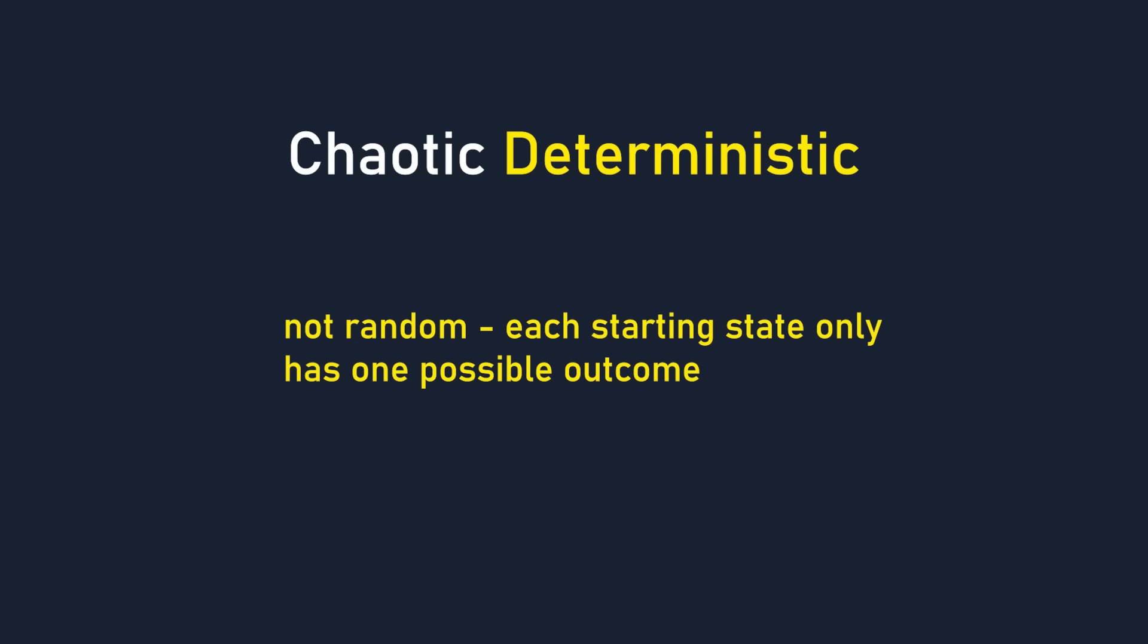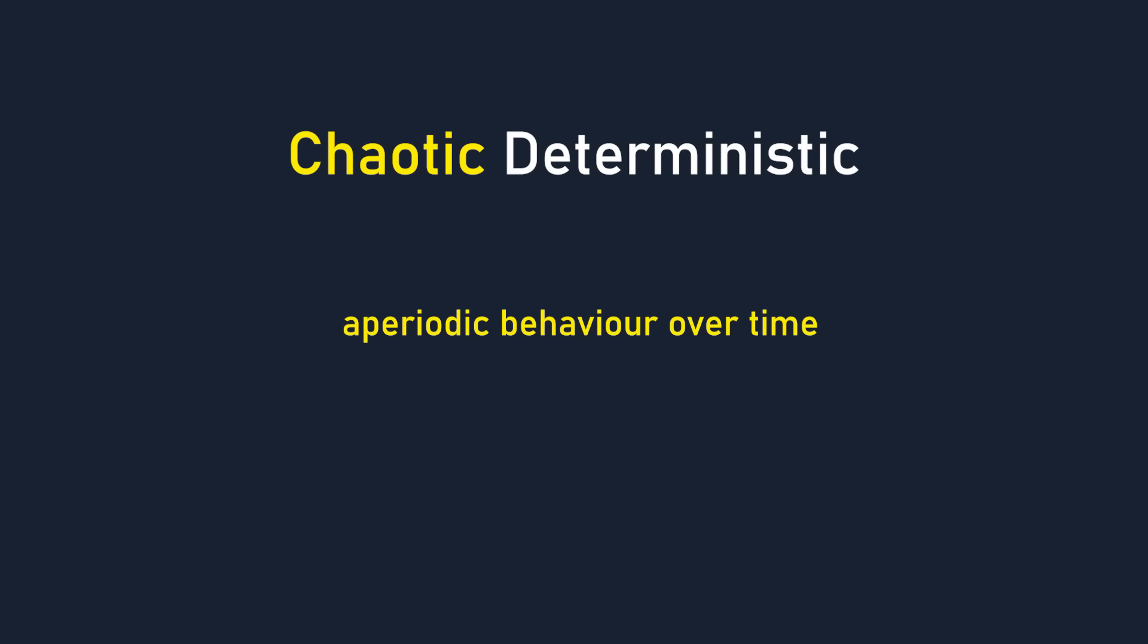The systems that were mentioned earlier are what's known as chaotic deterministic. Deterministic means that they are, in fact, not random. Given any initial conditions, there is one and only one way that the system will pan out. However, the fact that they're chaotic means they display aperiodic behavior over time, meaning there's no observable pattern as to how they behave, and are extremely sensitive to small changes in the initial conditions.